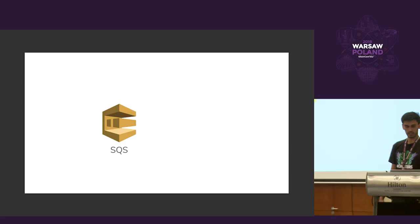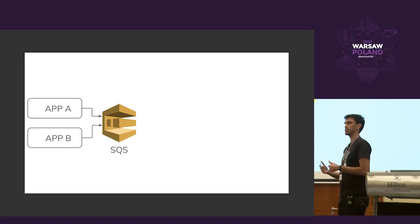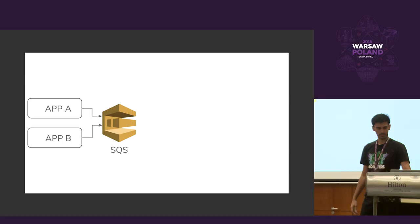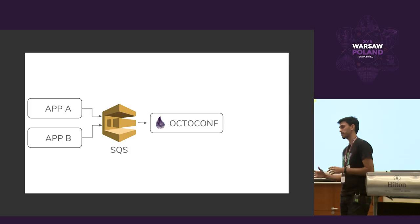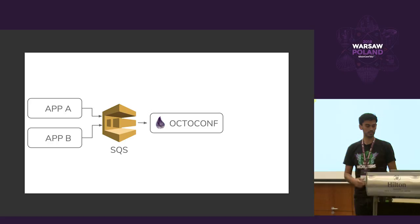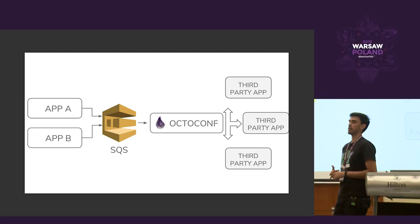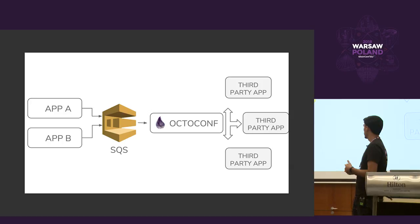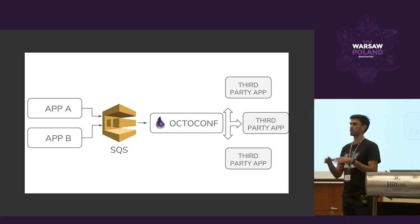Different apps were pushing messages to SQS. After a message is placed in SQS, we use an application called Octoconf — it's a template application that consumes all the messages we put in the SQS service. We then need to interact with third-party applications, and that is the main reason I'm talking here: if you just have a queue in your own domain, you don't have a problem.